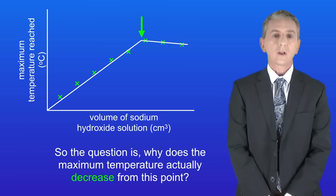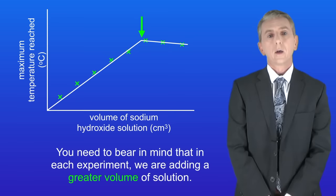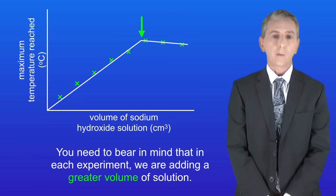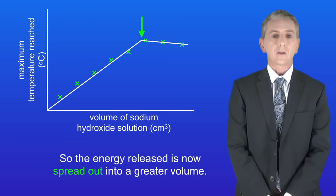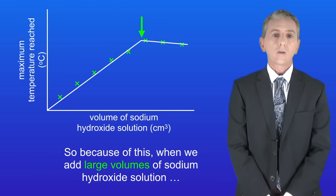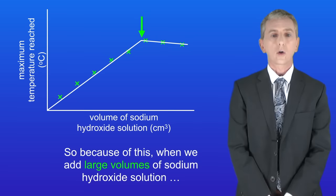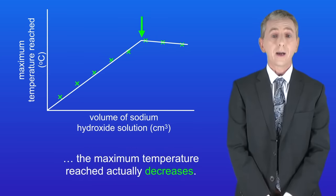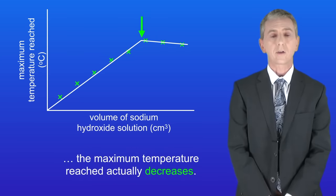So the question is why does the maximum temperature actually decrease from this point? Well you need to bear in mind that in each experiment we're adding a greater volume of solution. So the energy released is now spread out into a greater volume. So because of this when we add large volumes of sodium hydroxide solution the maximum temperature reached actually decreases.